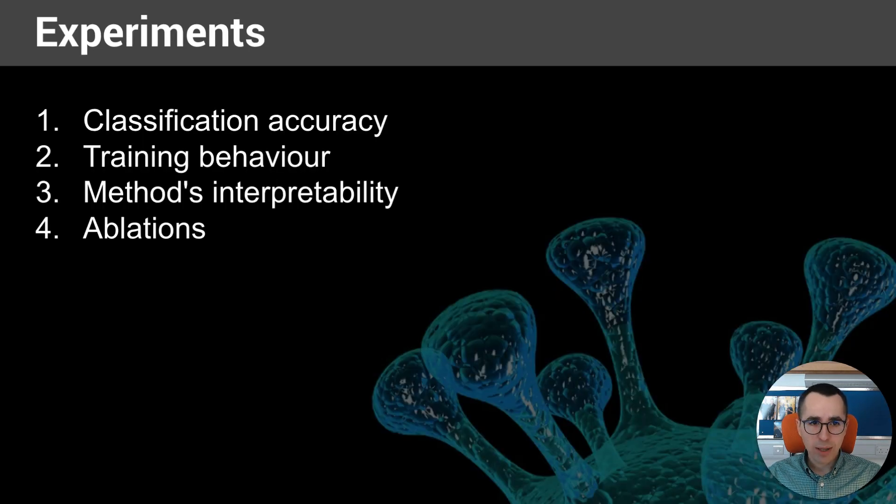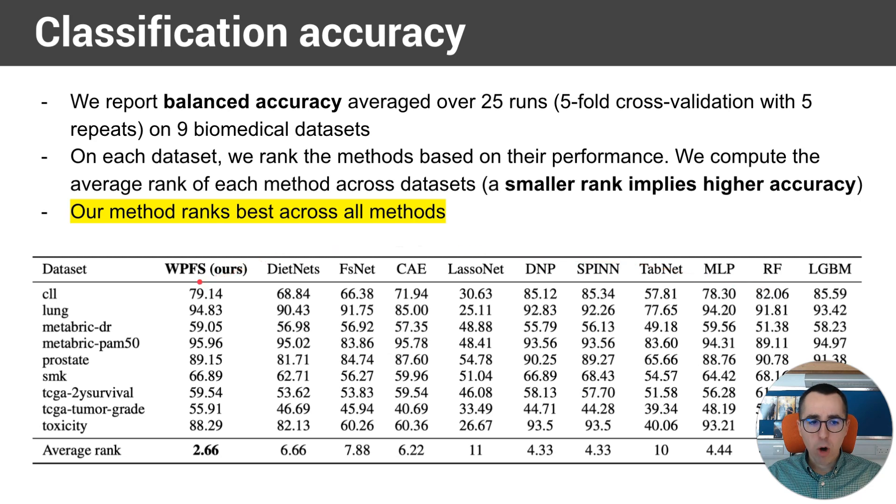Let's talk about the experiments. We compare our method with 10 different methods, both standard and modern methods, across 9 different datasets, classification tasks. We compute the balanced accuracy, and because we work with small datasets, we perform 5-fold cross-validation, and we repeat this 5 times. So we have a total of 25 runs across 9 datasets.